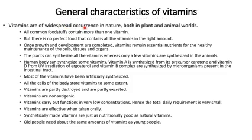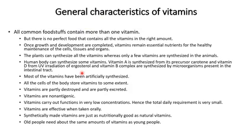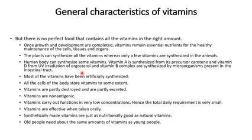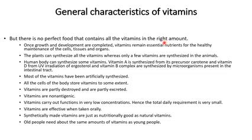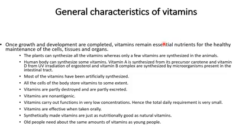Vitamins have widespread occurrence in nature, both in plants and animals. All common foodstuffs contain more than one vitamin, but the fact is that there is no perfect food that contains all vitamins in the right amount. Once growth and development are completed, vitamins are required essentially for the health maintenance of cells, tissues, and organs.